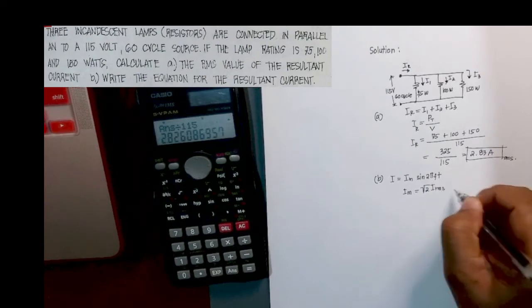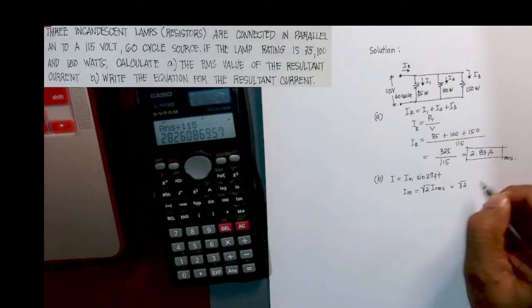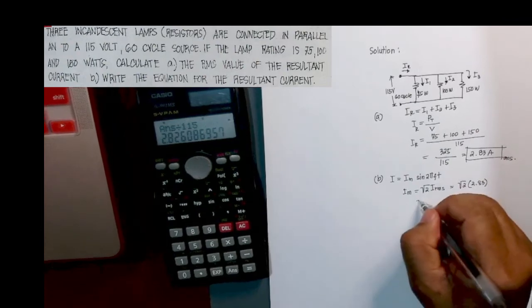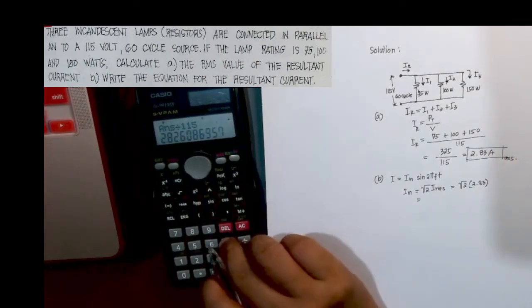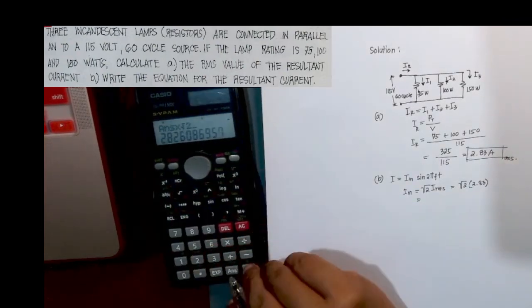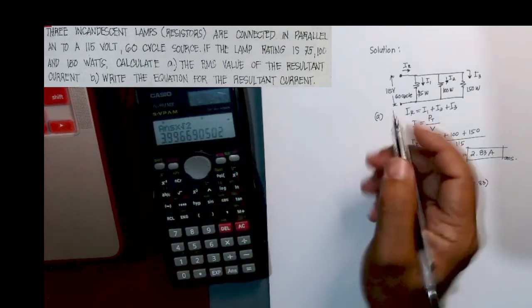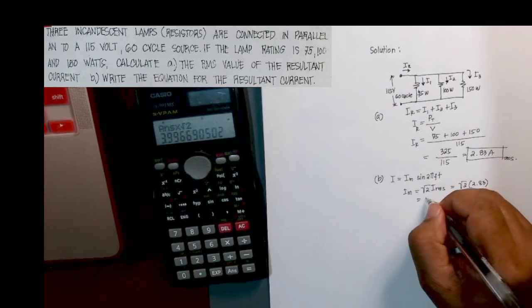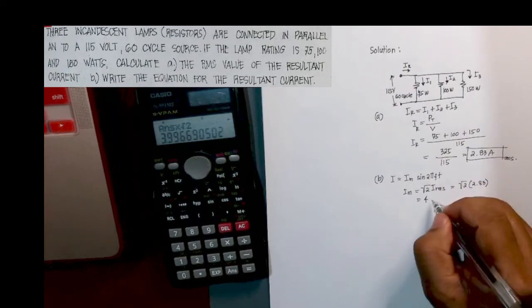And the maximum current can be solved by multiplying your RMS value by square root of 2. That is square root of 2 times your RMS value of your resultant current, 2.83. So we multiply this by square root of 2, and it will give us 3.99 or we simply round up to 4 amperes.